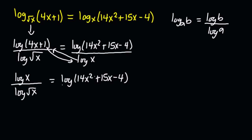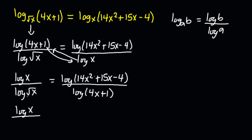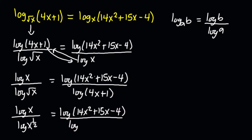Now I can rewrite this as log X on top — and log of root X is the same as log of X to the exponent 1/2 — and this is equal to log of (14x² + 15x − 4) divided by log of (4x + 1).